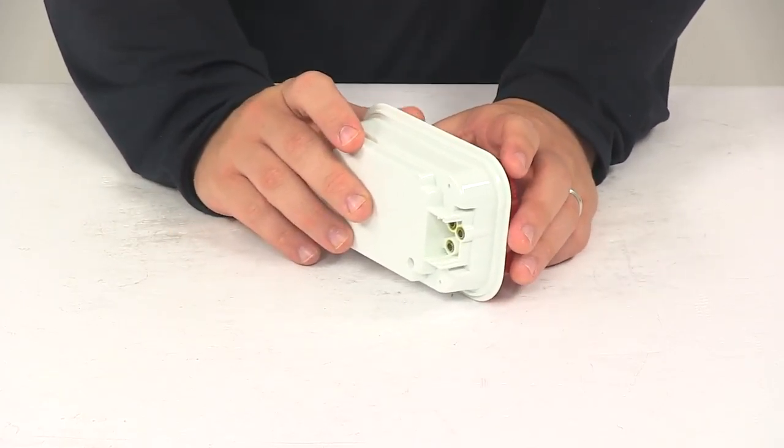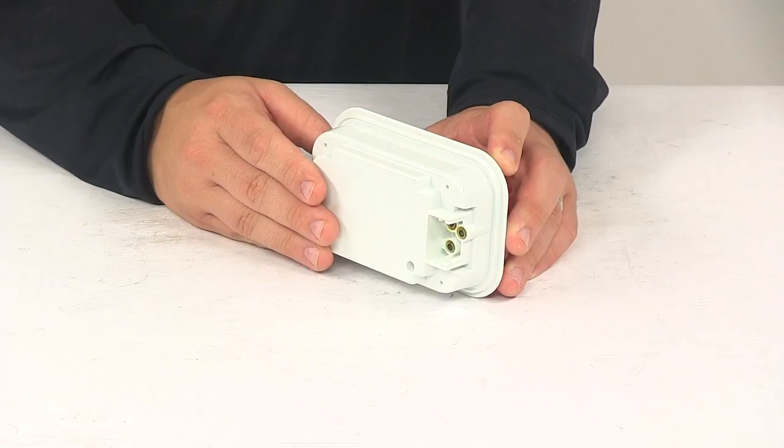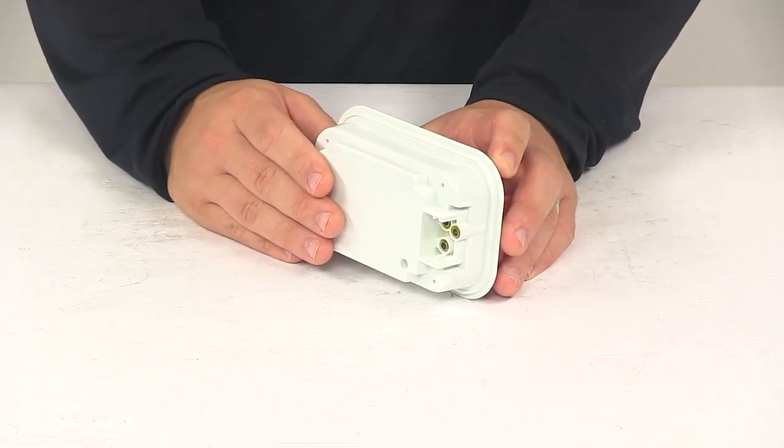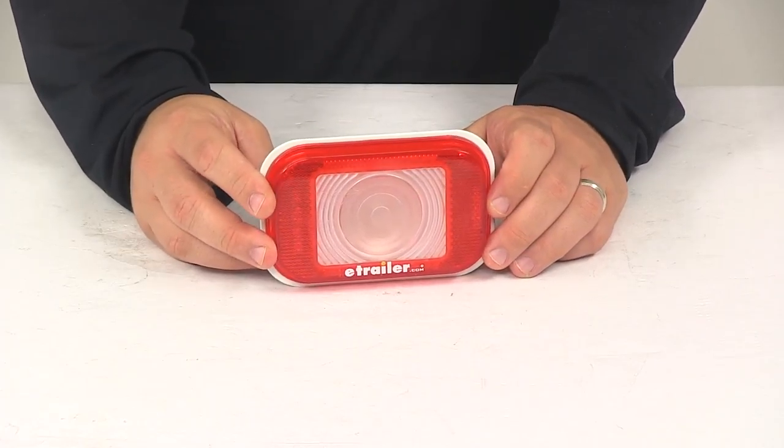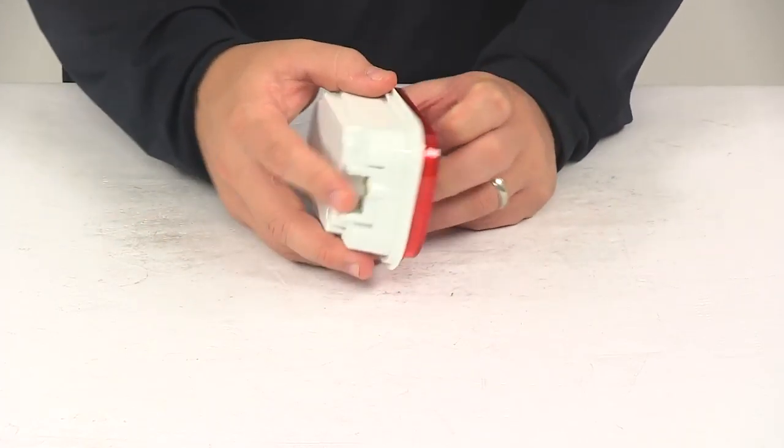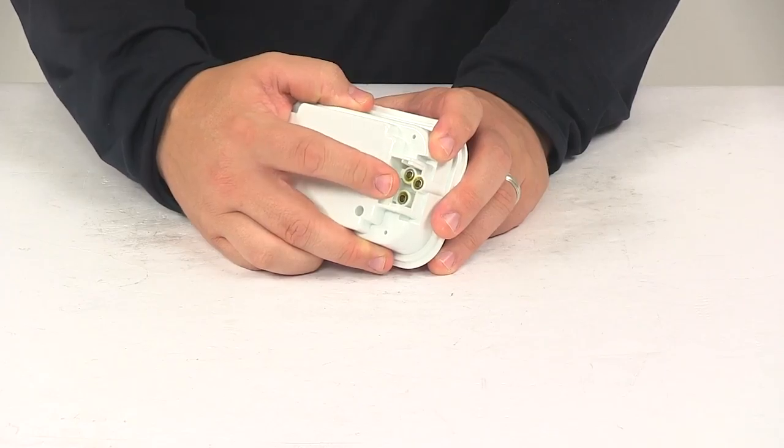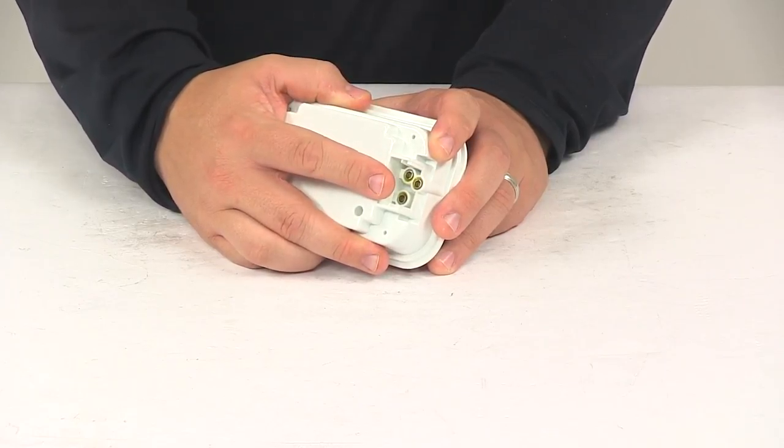When you're ready to mount this, it's designed to be a recessed mount installation with a mounting grommet. The grommet is sold separately and available here at eTrailer.com. This light will fit into a 5 1⁄2 inch long by 3 1⁄16 inch tall hole. It's also designed to accept an industry standard two-prong plug. That's sold separately as well and available at eTrailer.com.